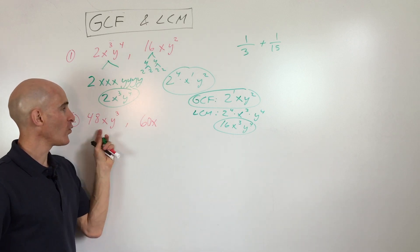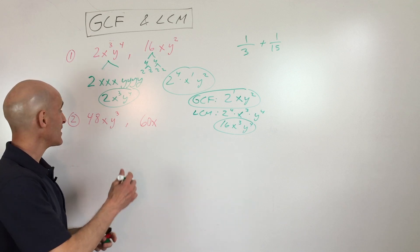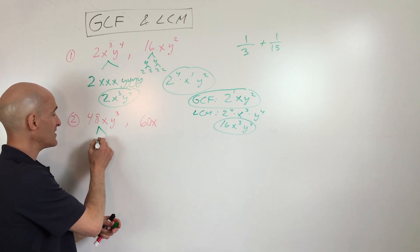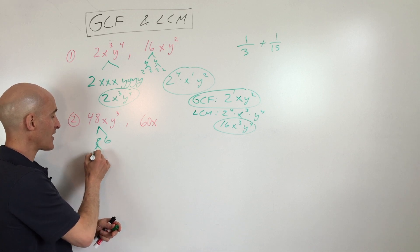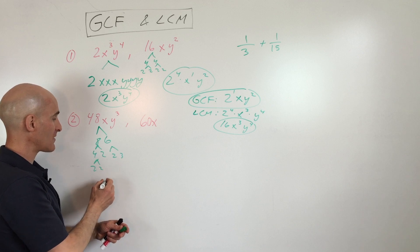So see if you can do this one on your own. If you want, pause the video and then you can restart it and see if you got it right. But let's dive right in. So basically 48 is 8 times 6. I'm just doing a prime factorization tree. 4 times 2, 2 times 3, 4 is 2 times 2.